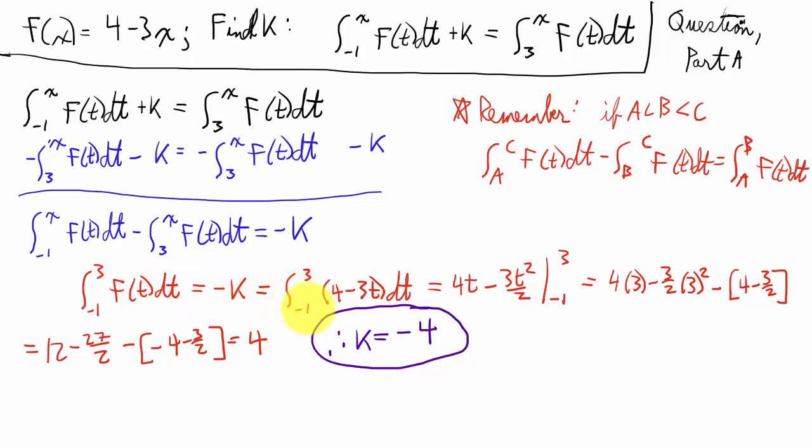So negative k is the integral from negative 1 to 3 of 4 minus 3t dt. Integrating that, I got 4t minus 3t squared over 2 from negative 1 to 3.